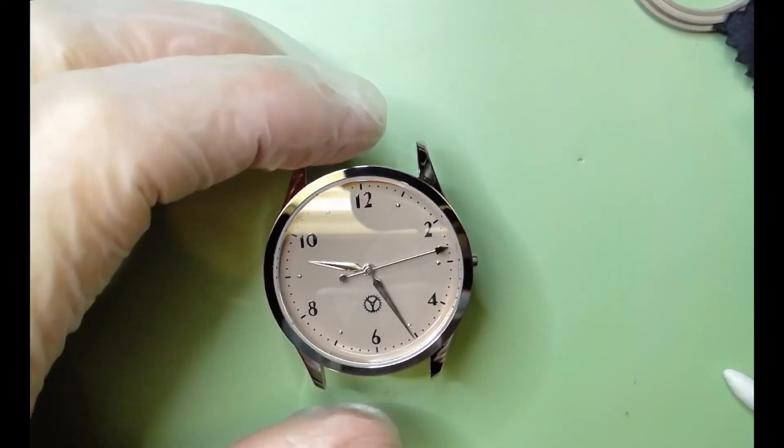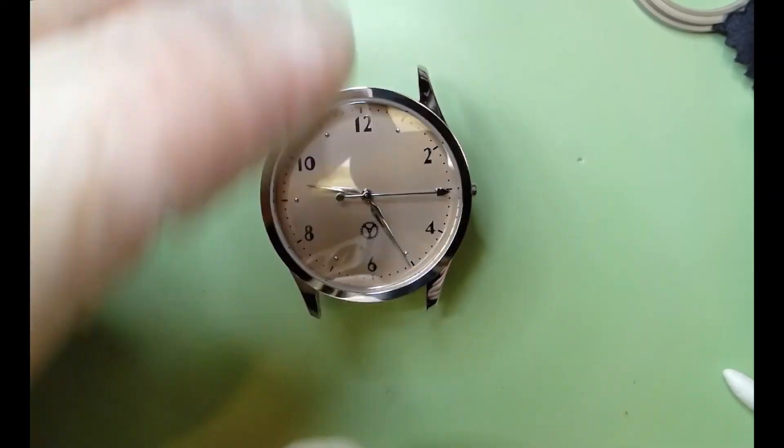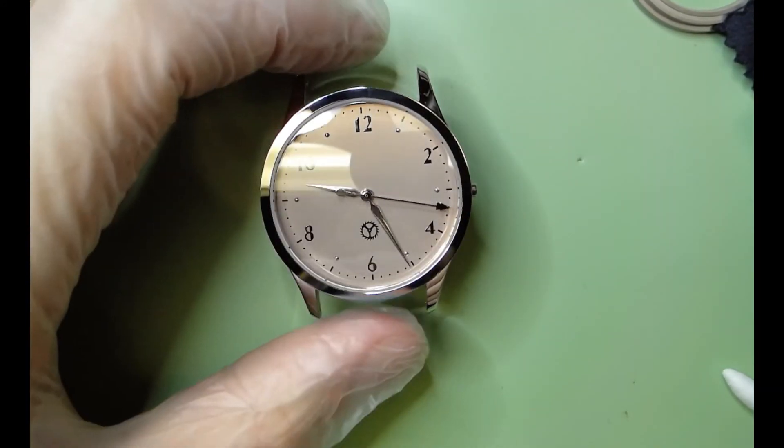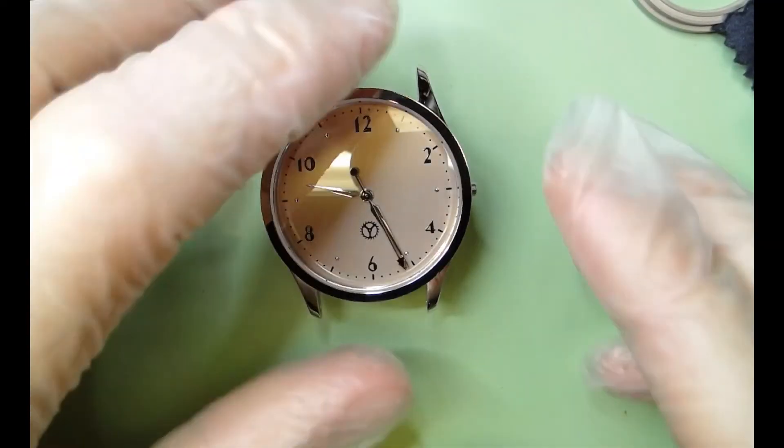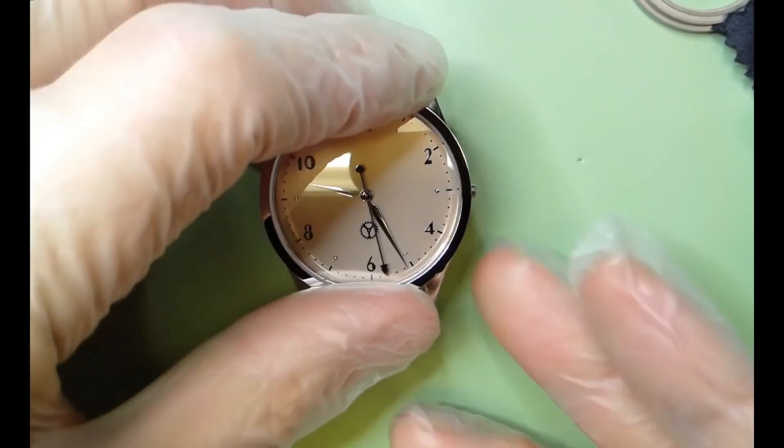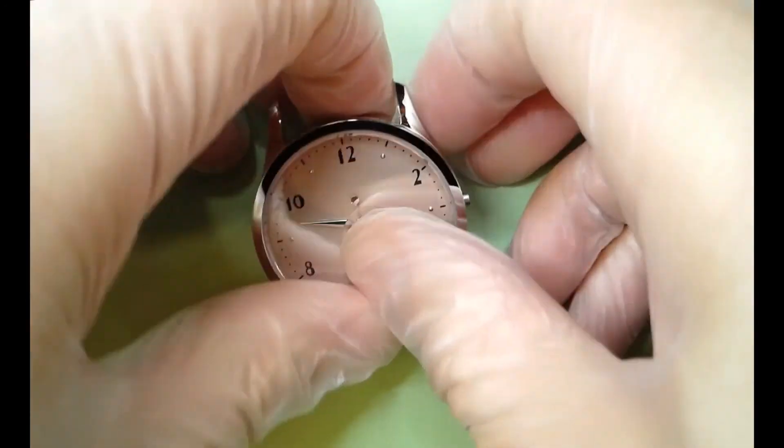This is where that special movement holder from Bergeon comes in handy because you can just set it there and perch the case on top of the dial and just give it looks from all angles. And once you're satisfied the case is cleaned out, your hands look good, then I roll everything over.